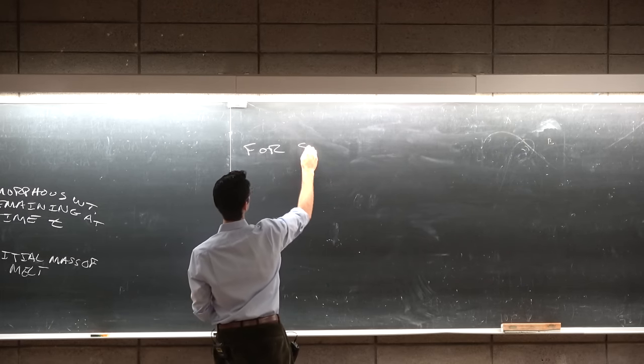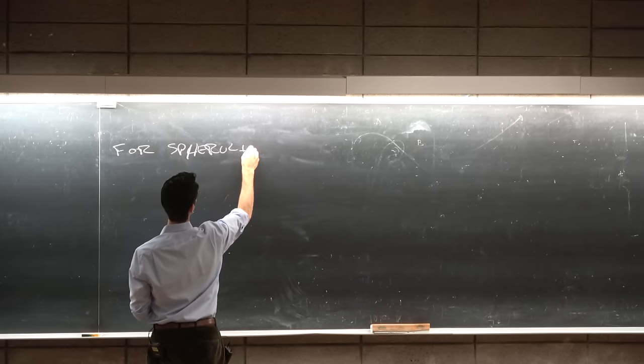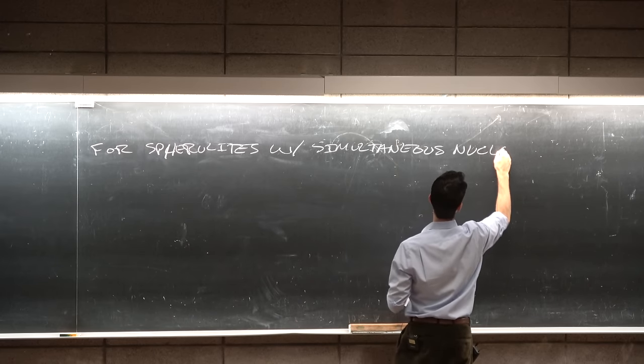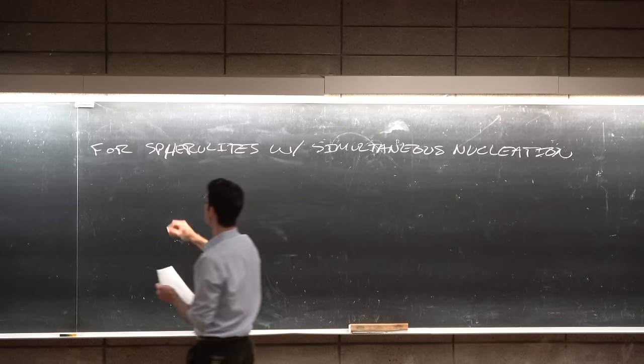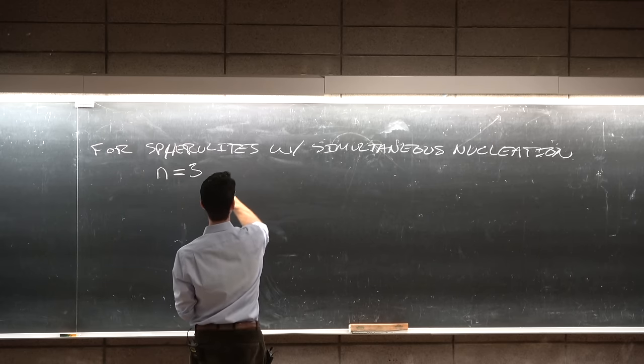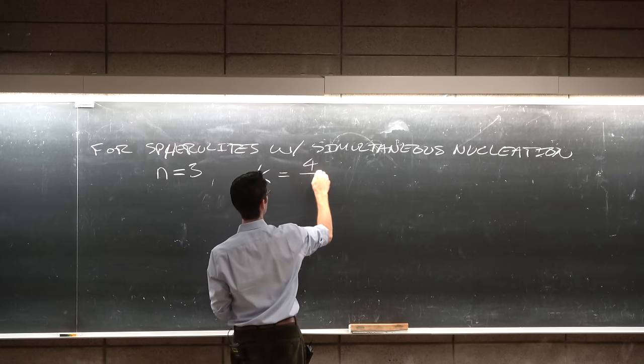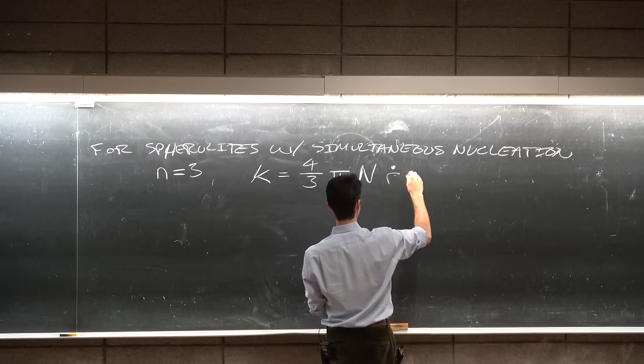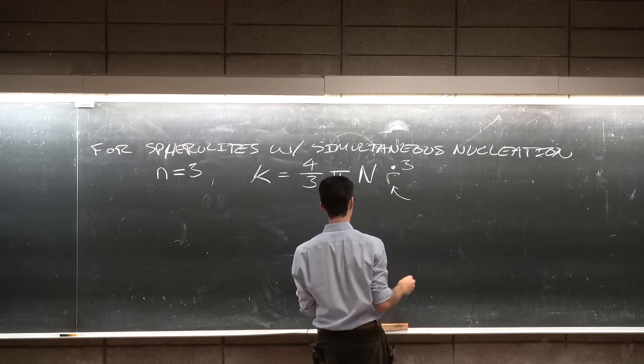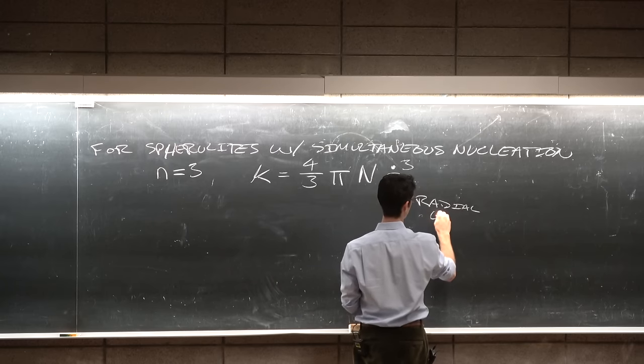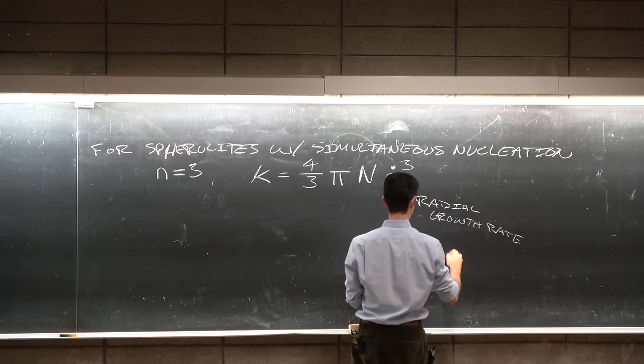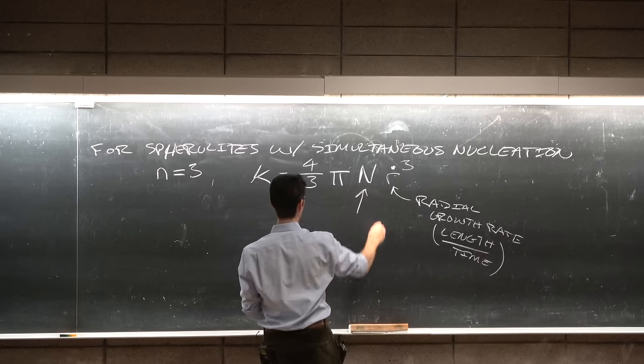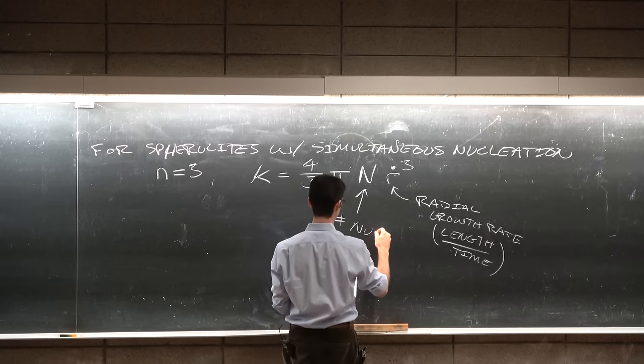So for spherulites with simultaneous nucleation we have the Avrami exponent n equals 3 and k equals 4 thirds pi times n times the radial growth rate, where r is the radial growth rate in units of length per time and capital N is the number of nuclei present at time t equals 0.